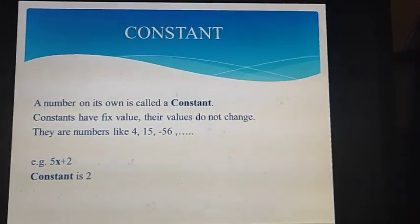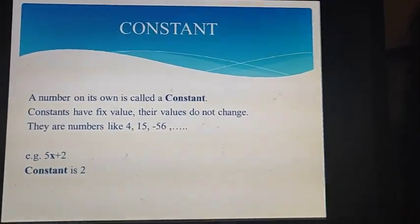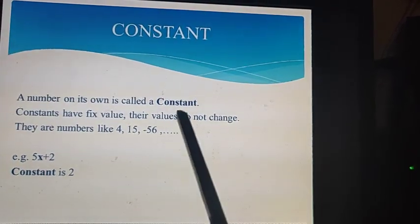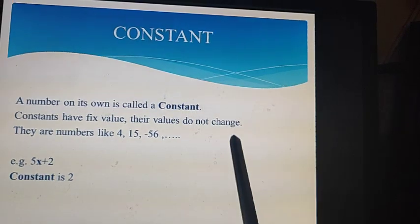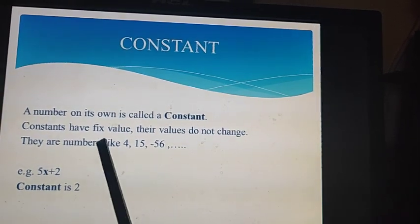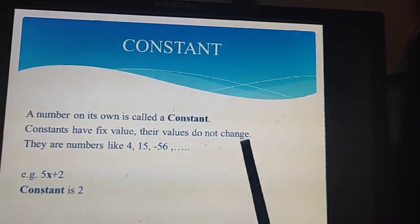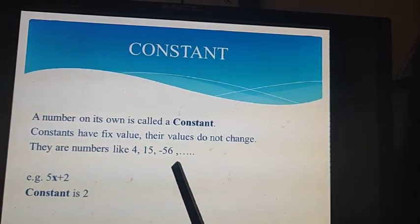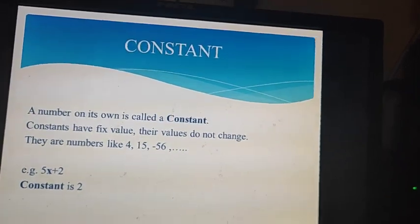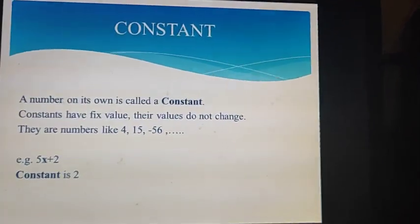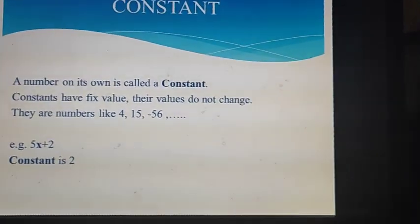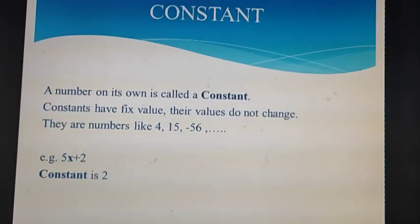Now let us see the next part, constants. What is constant? As the name indicates, constant does not change. A number on its own is called a constant. Any number, like 4, is a constant because 4 is 4. Its value is fixed. Constants have fixed values, their values do not change. They are numbers like 4, 15, -56, etc. Variables change their values, but constants remain the same. That is why they are called constant.